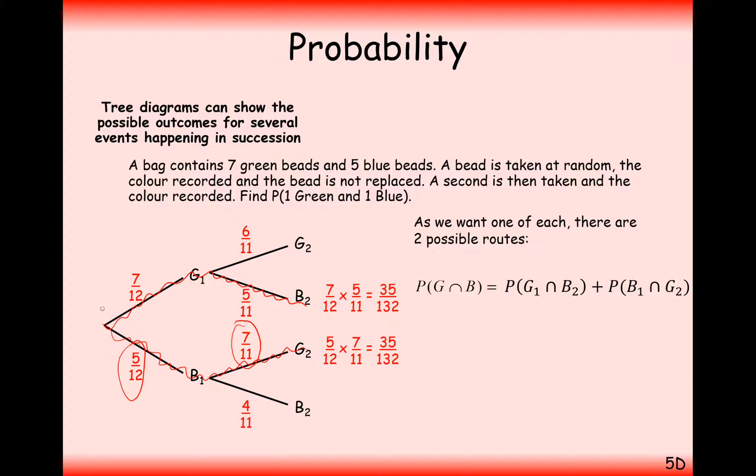Now if we don't mind which order we've pulled the beads out of the bag at, if it's green then blue or blue then green, then we can have a combination of these two probabilities. So our total answer here is seventy out of one hundred and thirty-two.